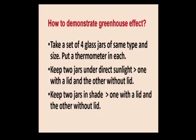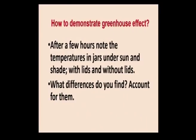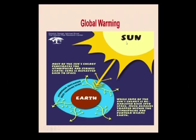How to demonstrate the greenhouse effect: take four glass jars of the same type and size, put a thermometer in each, keep two jars under direct sunlight — one with a lid and one without — and two in the shade. After a few hours, note the temperature in each jar. What difference do you find? Account for the observations. Now, regarding global warming: most of the sun's energy penetrates the atmosphere and strikes the surface; some is reflected back to space. The atmosphere contains heat-trapping gases, and while some re-radiated energy escapes to space, much remains trapped within the atmosphere and further warms the air.